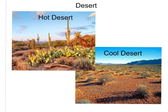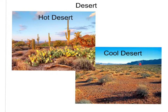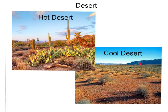The desert biome is characterized by a lack of precipitation, typically less than 25 centimeters per year. There are hot deserts and cool deserts. Hot deserts reach very high temperatures — examples include northern Africa's Sahara Desert, most of the Arabian Peninsula, Australia, and in the US, the Chihuahuan Desert and the Sonoran Desert in the southwestern states. There are also cool deserts where winter temperatures get really cold, such as the Great Basin Desert in Nevada and Utah, and the Painted Desert of the Four Corners region.